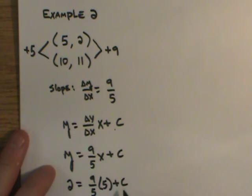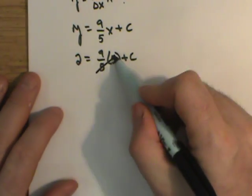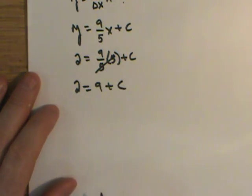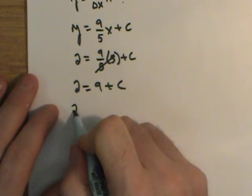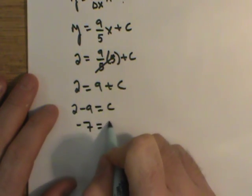I want to solve for c. I want to find the y-intercept. As I solve here, I can cancel these 5's out. Say 2 equals 9 plus c. I can move the 9 over. So I have 2 minus 9 is equal to c. Negative 7 equals c.